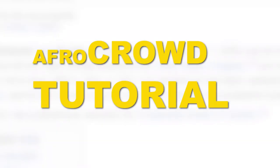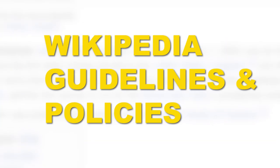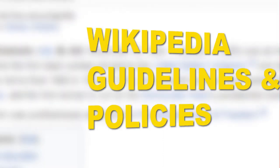There are no hard and fast rules on Wikipedia, but there are guidelines written by the community of editors. These are always being revised, but familiarizing yourself with them will increase your chances of being a successful editor.